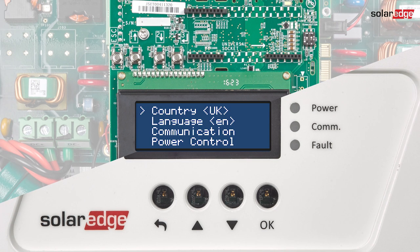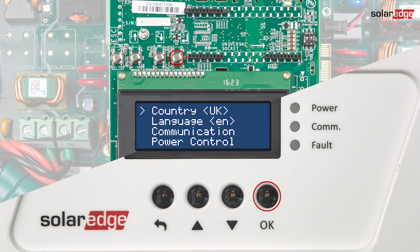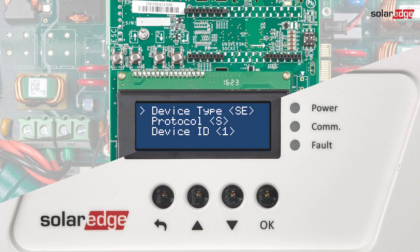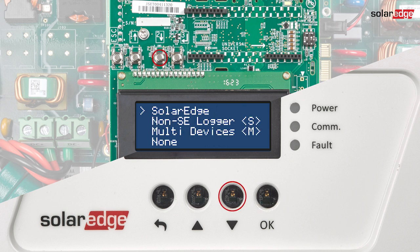We now enter the inverter configuration menu. Use the up and down buttons to scroll and the OK or Enter button to make a selection. Select Communication — we will now configure the RS-485 bus. Select RS-485-1-conf and then select Device Type; set it to multi-devices.